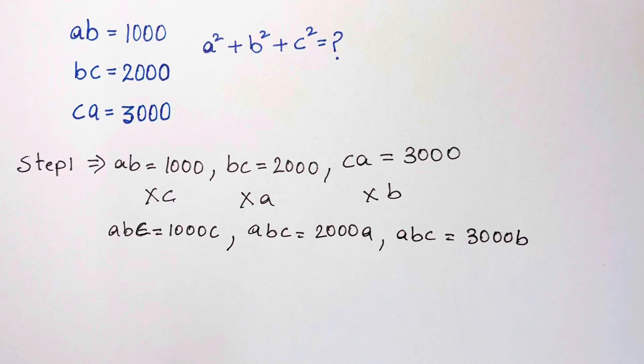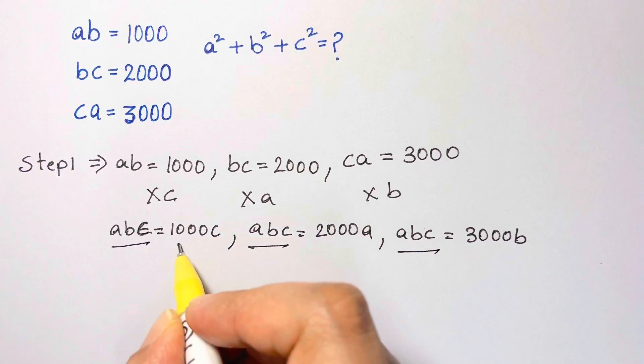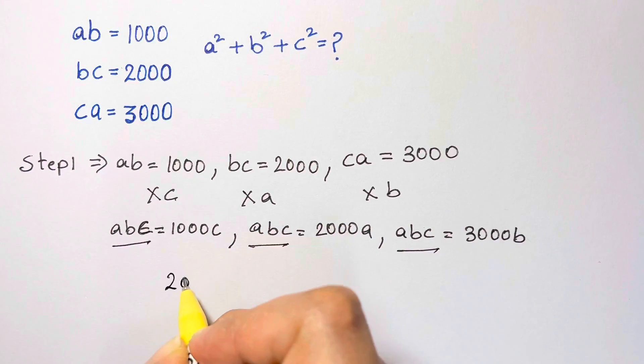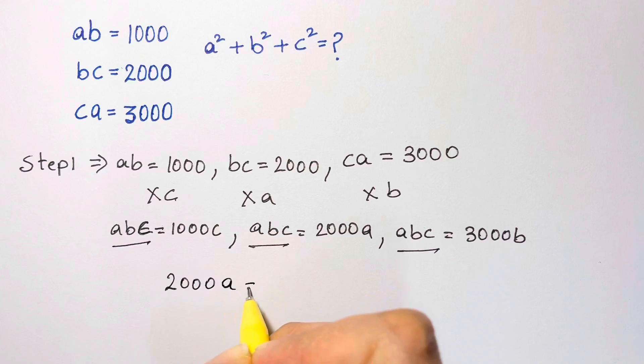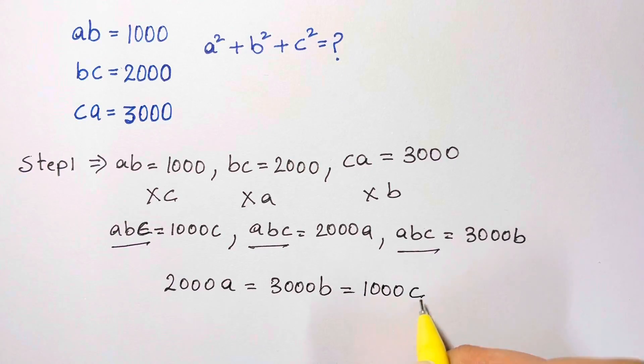So what can you identify from this? Here we have abc, abc, abc, all are same so we can equate them. So we have 2000a is equal to 3000b is equal to 1000c.